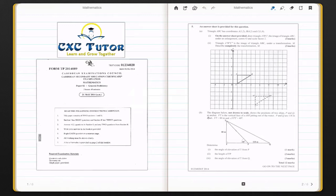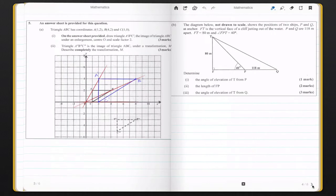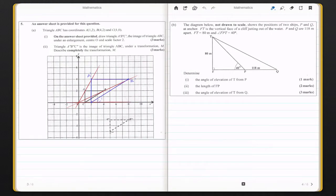In our last video, we did question 5a and we found the enlargement of the figure given by a factor of 2. Now, 5a part 2 asks us to describe the transformation as you would go from the triangle ABC, that will be our original triangle, to the transformation M.